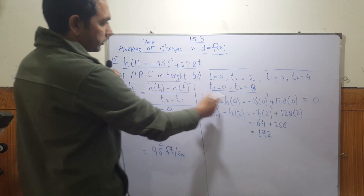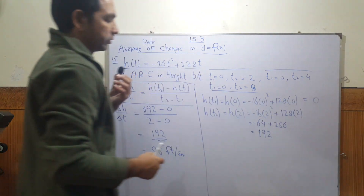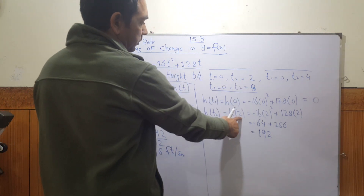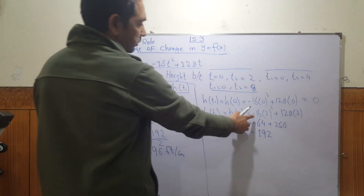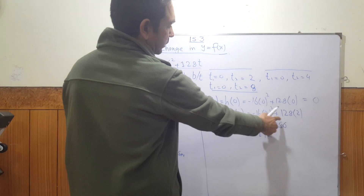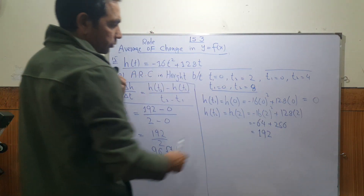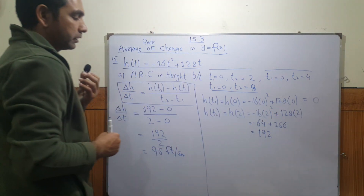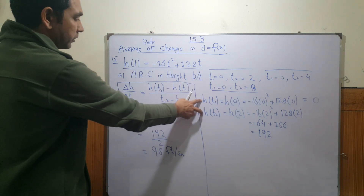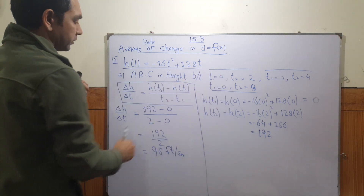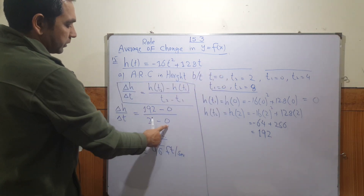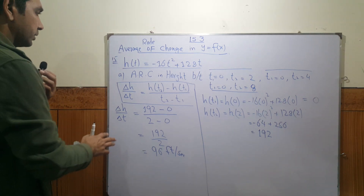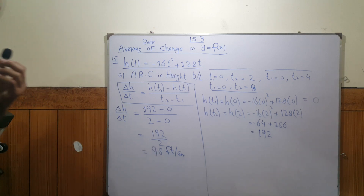For part 1, t₁ = 0 and t₂ = 2. Putting t = 0 gives h(0) = 0. Putting t = 2: -16(2²) + 128(2) = -64 + 256 = 192. So the average rate of change is (192 - 0) divided by (2 - 0) = 96 feet per second.